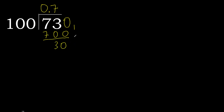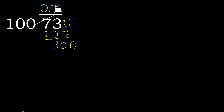There is no number, therefore complete — always complete with 0. 0 point here. 300. 100 multiplied by 3 is 300. Subtract — 0. Therefore finish.